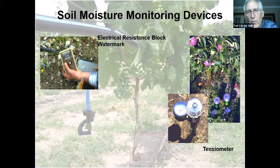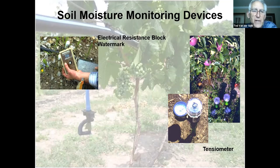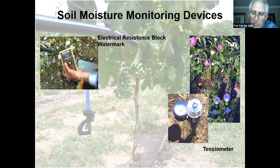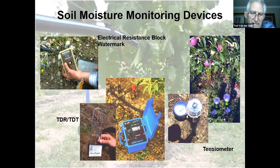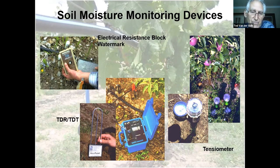The advantage of the Watermark is you can install a lot of them for the same cost as a tensiometer and only need one meter. Also the Watermark reads to a higher drought level — a tensiometer crashes at around 60-70 centibars whereas the Watermark can go to about 200 centibars. In a clay soil that's starting to dry out, it can easily exceed 70 centibars and still have enough moisture, but the tensiometer can't read it. There are also more sophisticated time domain reflectometry devices like GrowPoint.